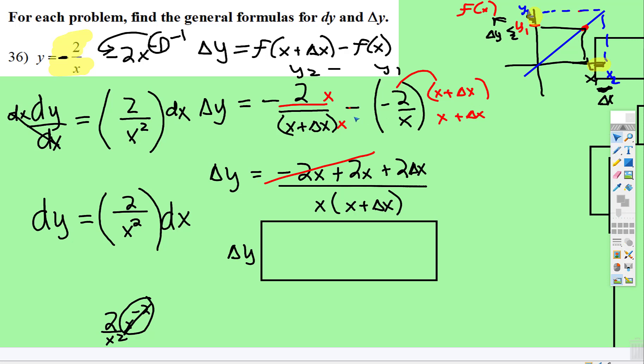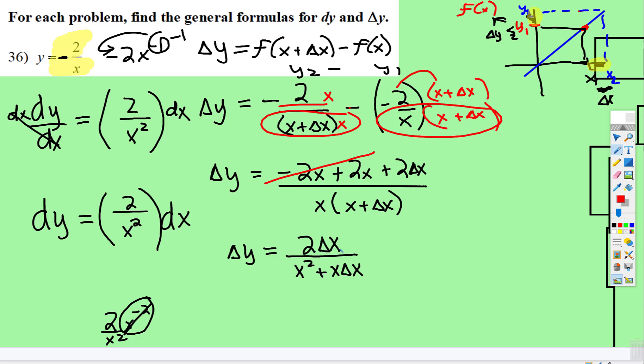Oh, and in the denominator, now you just have this expression right here. We're going to leave it like that. And then I think, when I finally simplify, I do the distributive. So we have 2 delta x over x squared plus x delta x. Alright, that's it for this one.